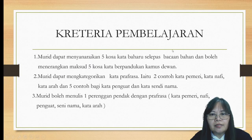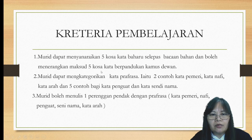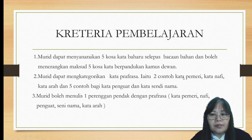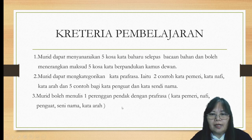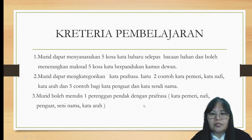Kita lihat selepas PDPR, kriteria pembelajaran ialah murid dapat mengenal pasti lima kosa kata baharu selepas bacaan bahan dan boleh menerangkan maksud lima kosa kata berdasarkan Kamus Dewan. Nombor dua, murid dapat mengkategorikan kata prafrasa iaitu dua contoh kata pemberi, dua contoh kata nafi, dua contoh kata arah, dan lima contoh bagi kata penguat dan kata sendi nama. Akhir sekali, murid boleh menulis satu perenggan pendek dengan menggunakan kata prafrasa iaitu kata pemberi, nafi, penguat, sendi nama, dan kata arah yang sudah dipelajari.